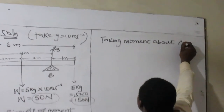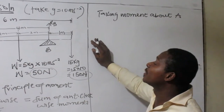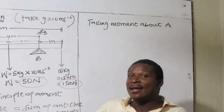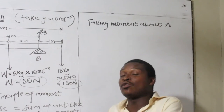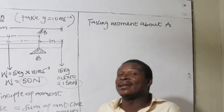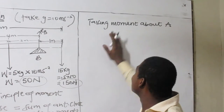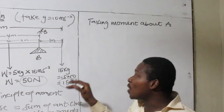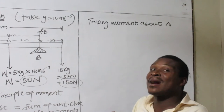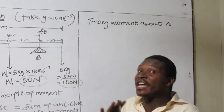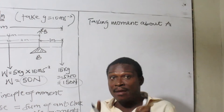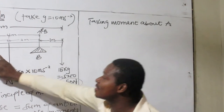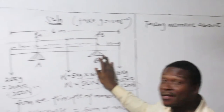Taking moment about A. Some of you can also take moment about B, although your clockwise will become anti-clockwise and my anti-clockwise will become clockwise — all of us will get the same answer. So when I take moment about A, there should be a pattern to follow. When you take moment about B, our patterns will change, but all of us will arrive at the same answer.